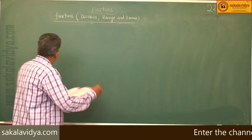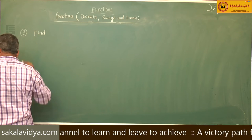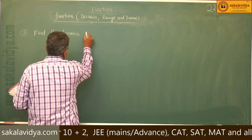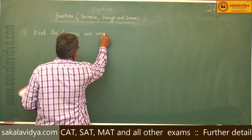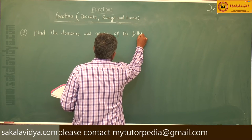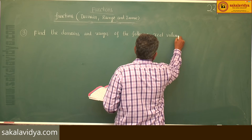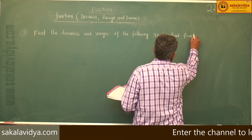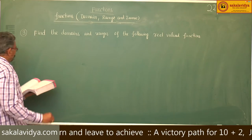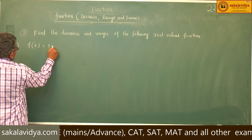Third problem: find the domains and ranges of the following real-valued functions. First one, f of x is equal to (2 plus x) by (2 minus x).